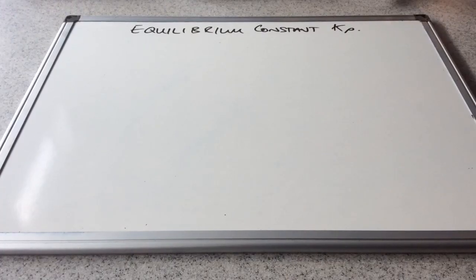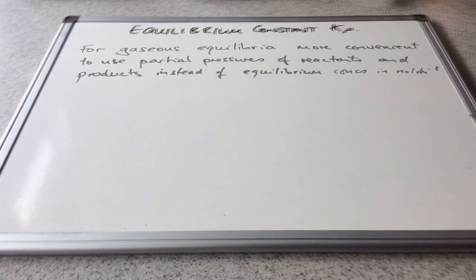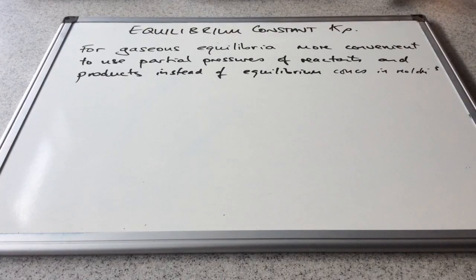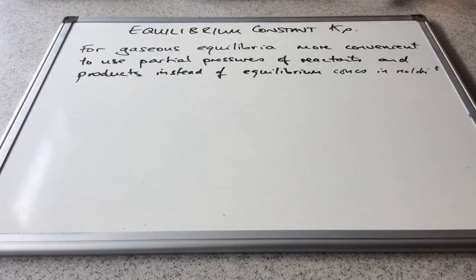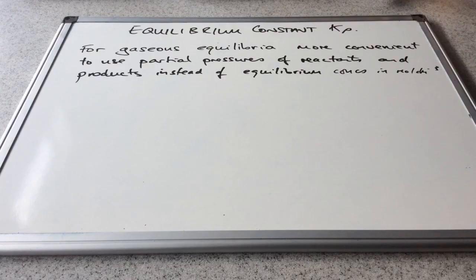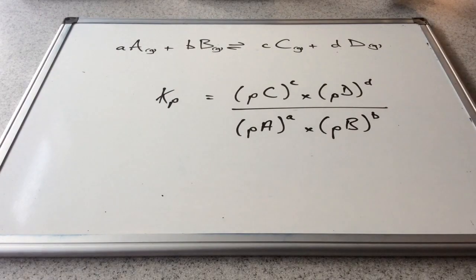In this video I'm going to introduce the equilibrium constant Kp. For gaseous equilibria it's actually more convenient to use partial pressures of reactants and products instead of equilibrium concentrations measured in moles per decimetre cubed. Hopefully before you've watched this video you've seen Kc in operation, using those equilibrium concentrations. So instead we're going to derive an equilibrium constant using partial pressures of gases. Before I go into a specific example I'm just going to go through the generic formula for Kp.